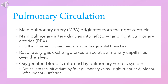Respiratory gas exchange takes place at the pulmonary capillaries over the alveoli. Oxygenated blood is returned by the pulmonary venous system, which drains into the left atrium by four pulmonary veins – right and left superior and inferior pulmonary veins.